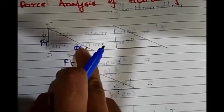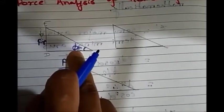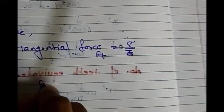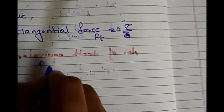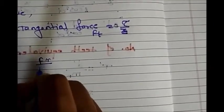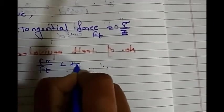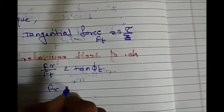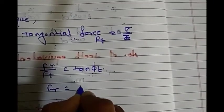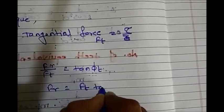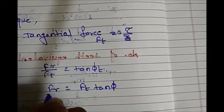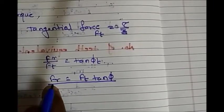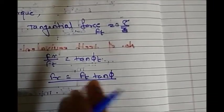From triangle EDC, we can develop the relation for FR: FR upon FT equals tan(φT), so FR is equal to FT × tan(φT). This is the equation for radial force in terms of tangential force.